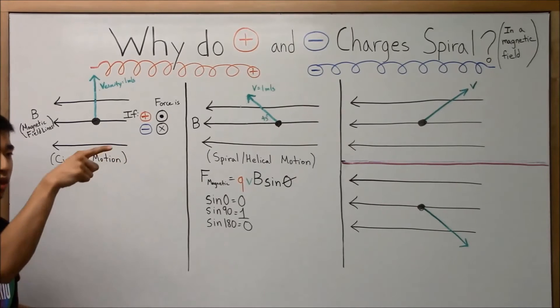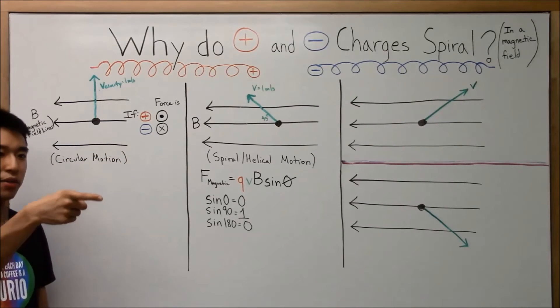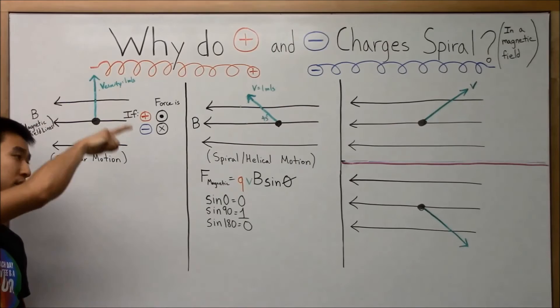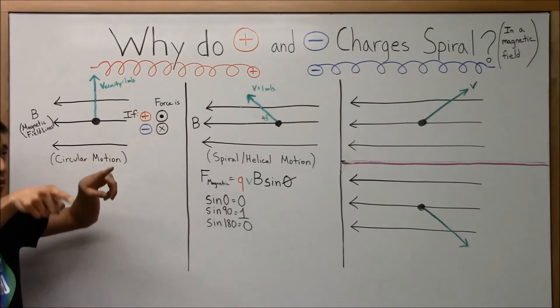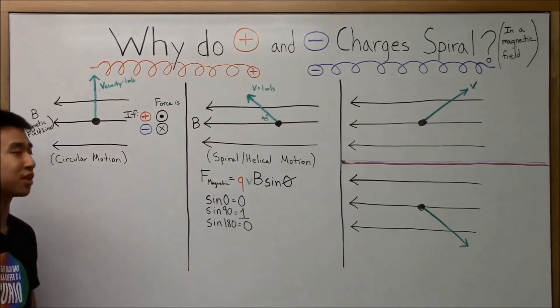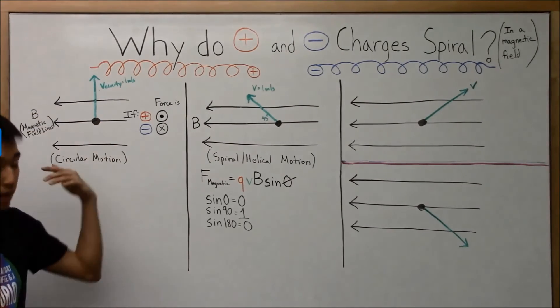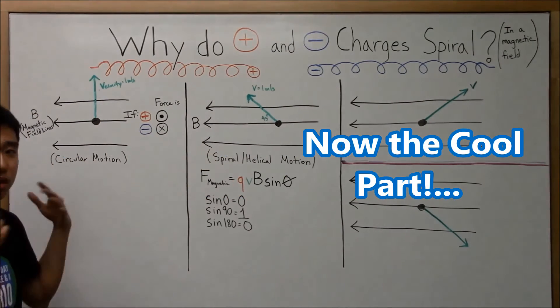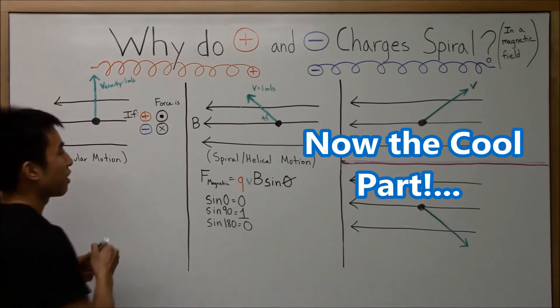If it was a negative charge, same thing, but it would just start here, go up, and then into the board because the force is pushing it into the board first. And then, yeah, circular motion. Okay. Now, in this situation, you have the same exact thing. Kind of. All right. But, whenever you have your velocity and field at an angle between 0 and 90, like 45 degrees, there's always going to be a component.